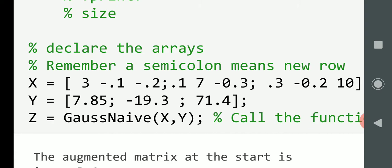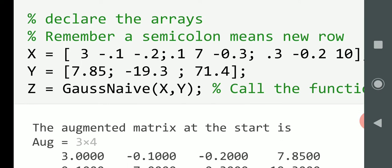We're using the example we did above. So, x there is the original matrix. Remember each semicolon will give you a row. 3 minus 0.1 minus 0.2 is row 1. 0.1 7 minus 0.3 is row 2, etc. The right hand side, I called it B above. 7.85 minus 19.3 and 71.4. And we're going to call a function called gaussNaive. And the two inputs are the two matrices X and Y. And the output is Z.